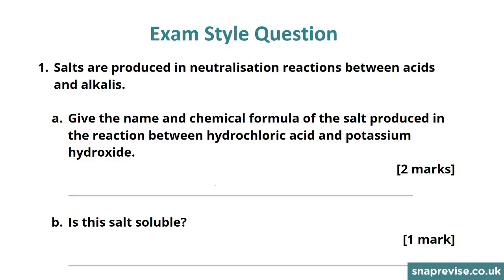In this video we're going to look at an exam style question focusing on neutralisation reactions and salts. The question starts by telling you that salts are produced in neutralisation reactions between acids and alkalis, and it then asks you to give the name and chemical formula of the salt that is produced in the reaction between hydrochloric acid and potassium hydroxide.